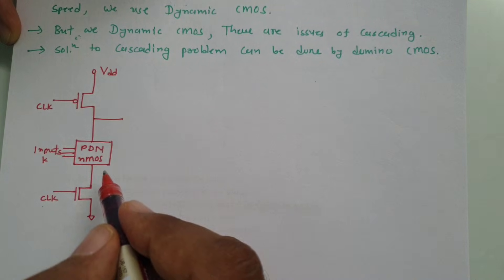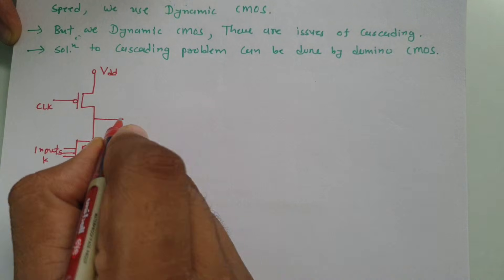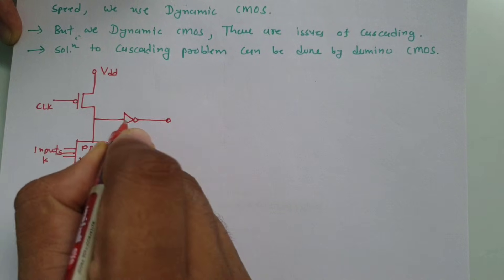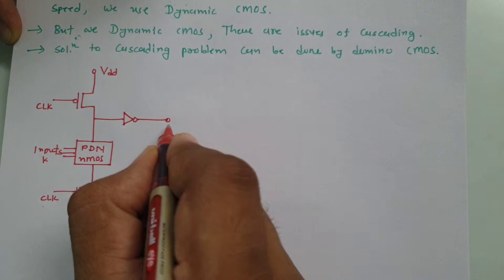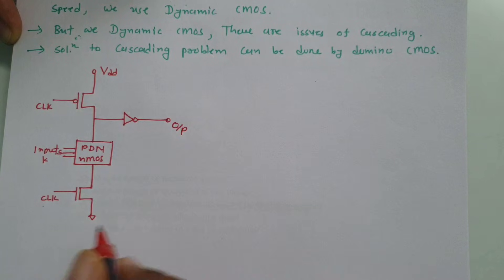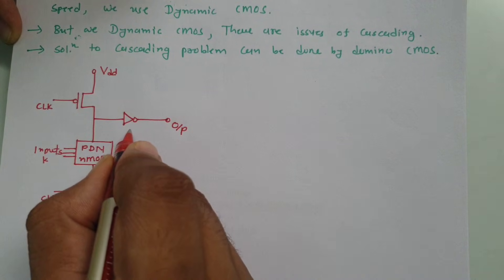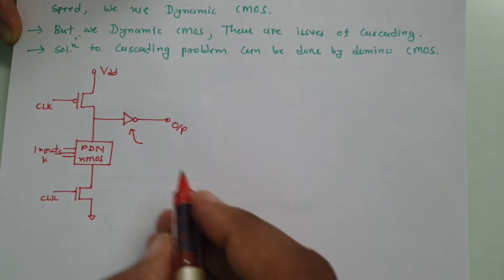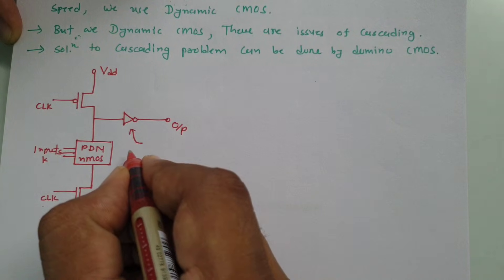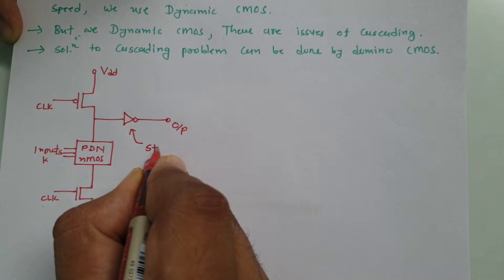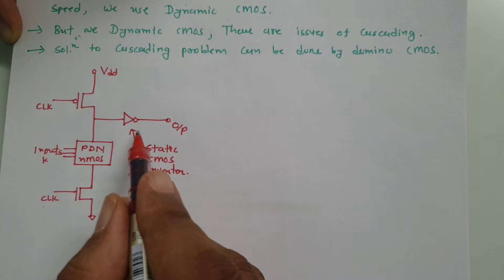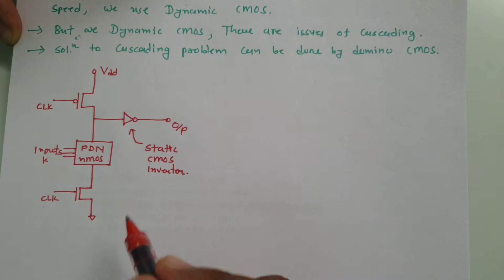But in Domino Logic CMOS, here we connect a static inverter and then take the output. So the basic difference is we connect a static CMOS inverter at the output side in Domino Logic CMOS. This static CMOS inverter is the basic difference which we have.